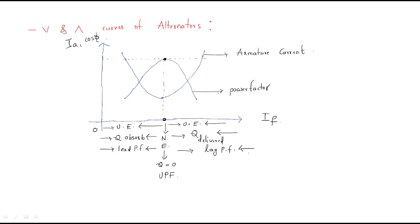Both power factor and armature current move in opposite directions. This phenomenon works when mechanical power is constant and field current is varied. The V-shaped curve of armature current versus field excitation is known as the V curve, and the inverted-V shaped curve of power factor versus field excitation is known as the Inverted-V curve.